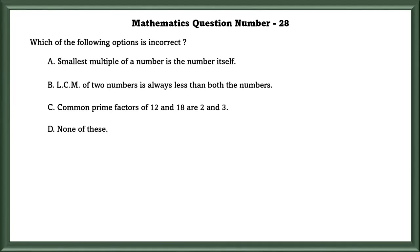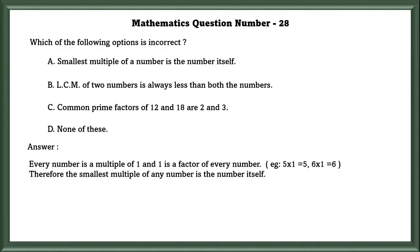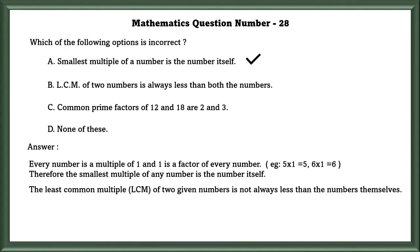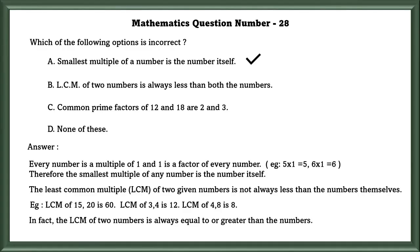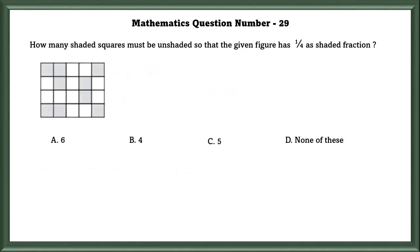Mathematics question number 28: Which of the following options is incorrect? Option A — the smallest multiple of a number is the number itself — is correct. Option B states that the LCM of 2 numbers is always less than both numbers. This is incorrect: for example, LCM of 15 and 20 is 60, LCM of 3 and 4 is 12. The LCM is always equal to or greater than the numbers. Option C — common prime factors of 12 and 18 are 2 and 3 — is correct. So the incorrect option is B.